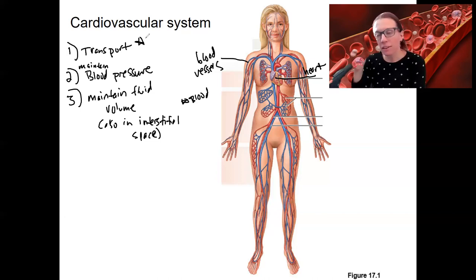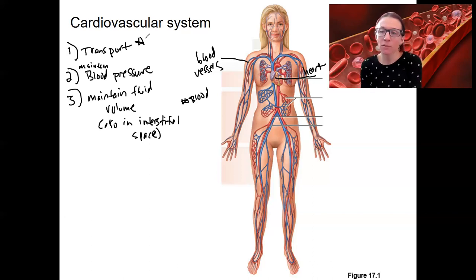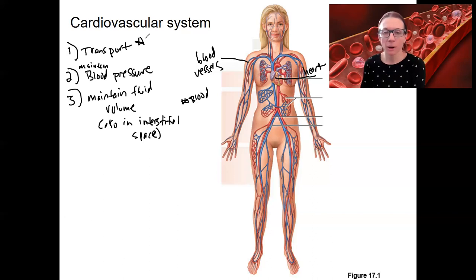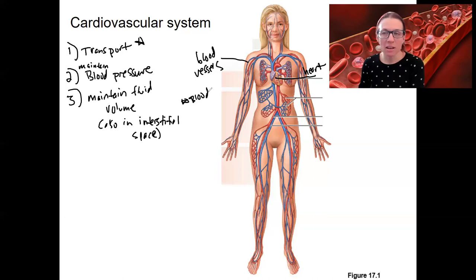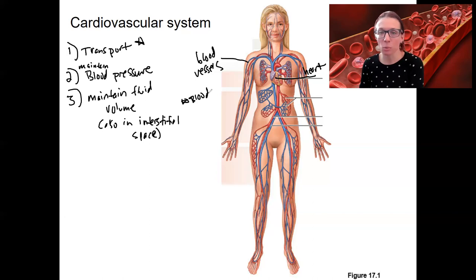One other thing I'll touch on this week is the lymphatic system. Lymph is another type of extracellular fluid and also plays a role in immune defense. It overlaps in structures and functions with the blood, so I will touch on that this week as well.